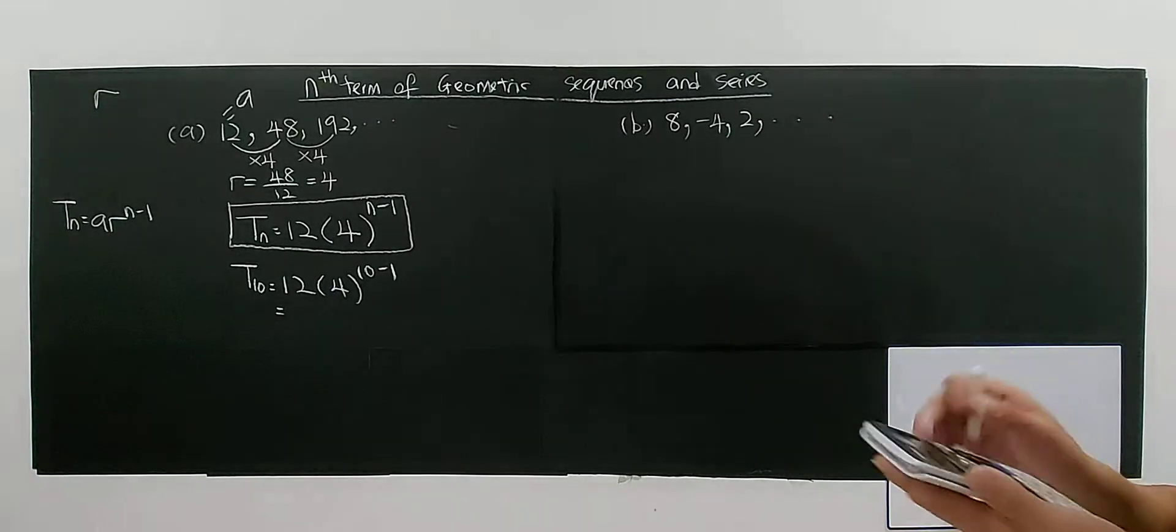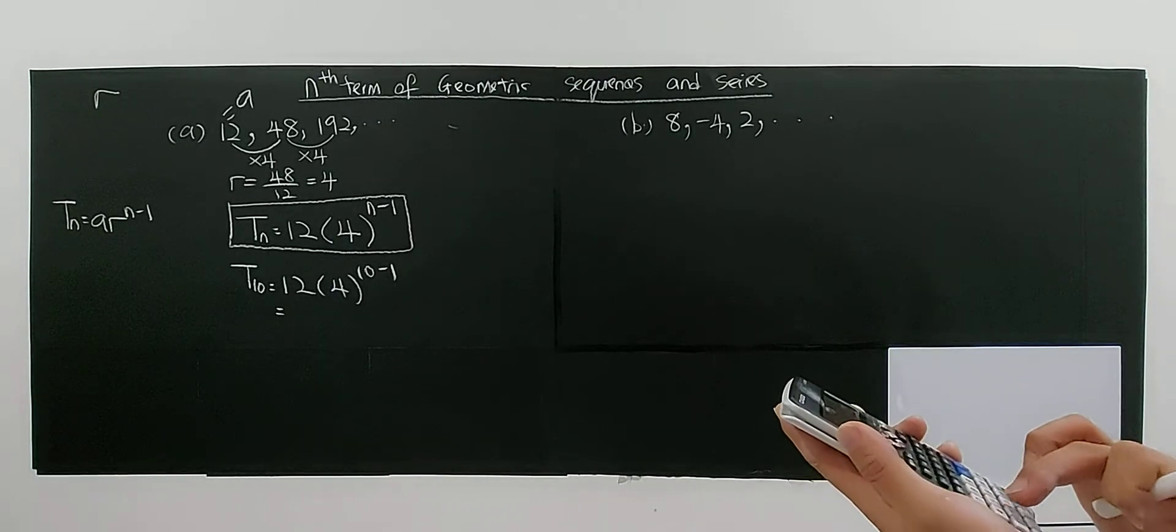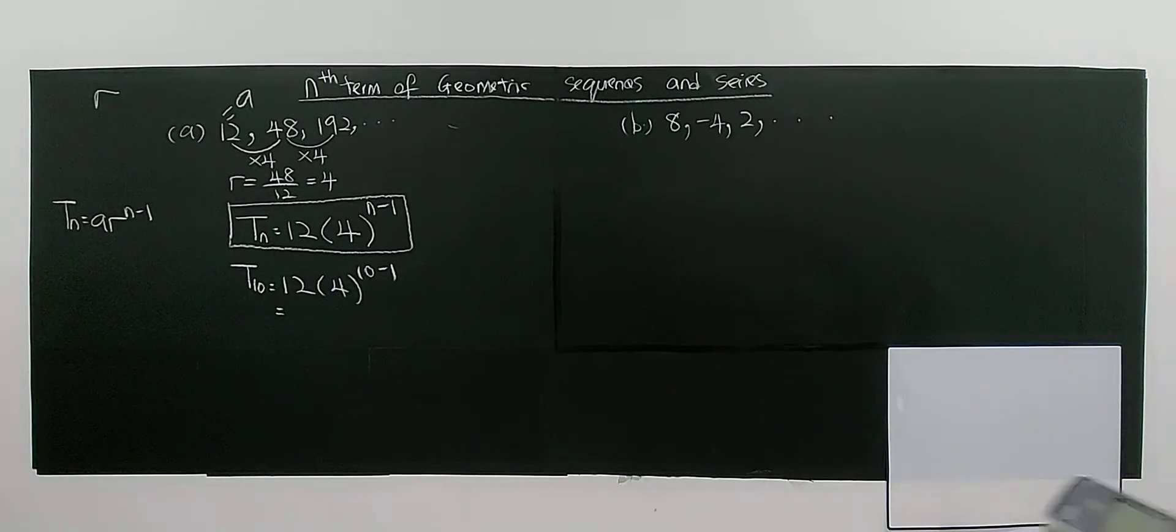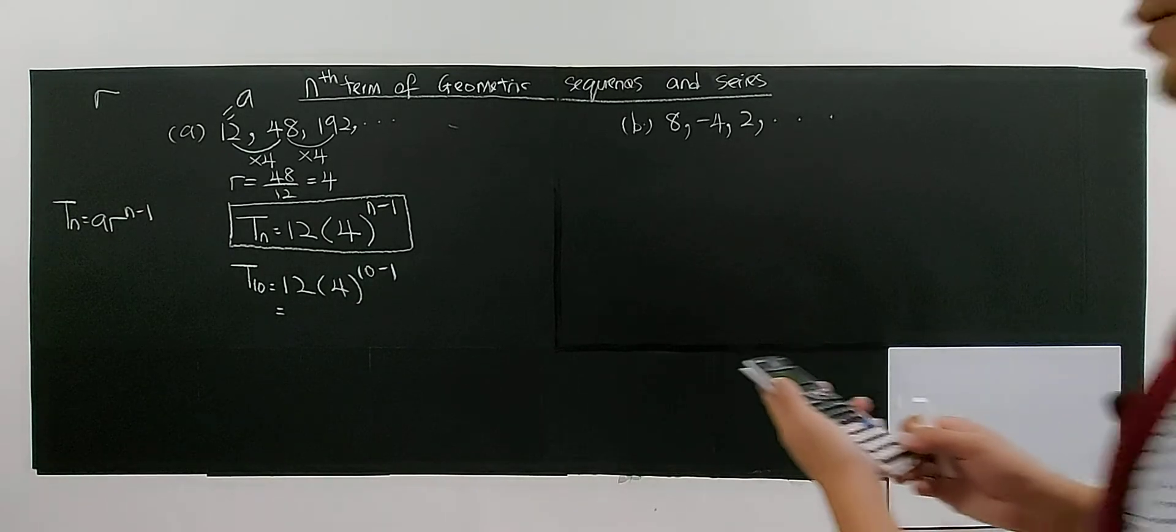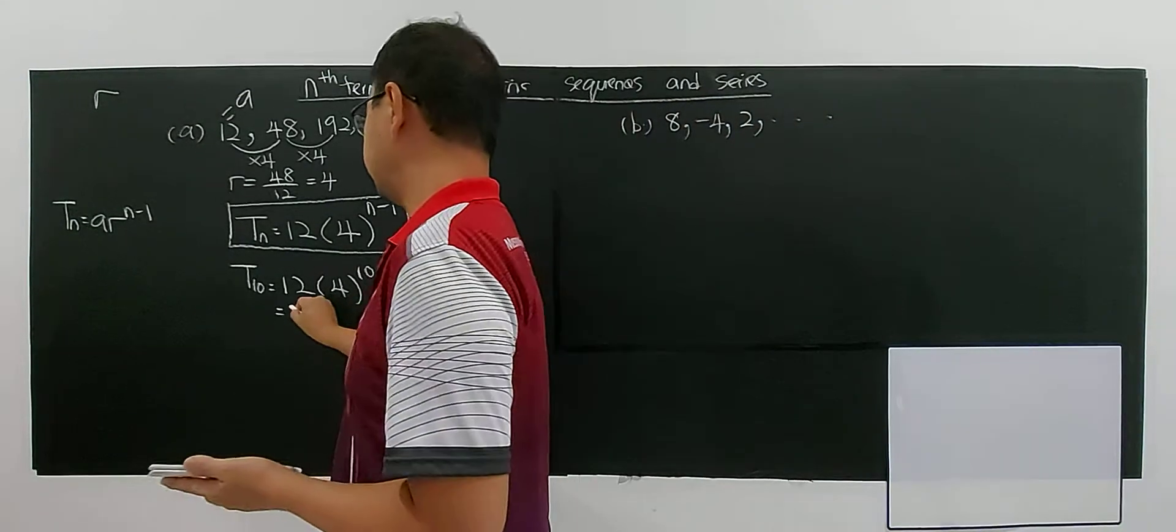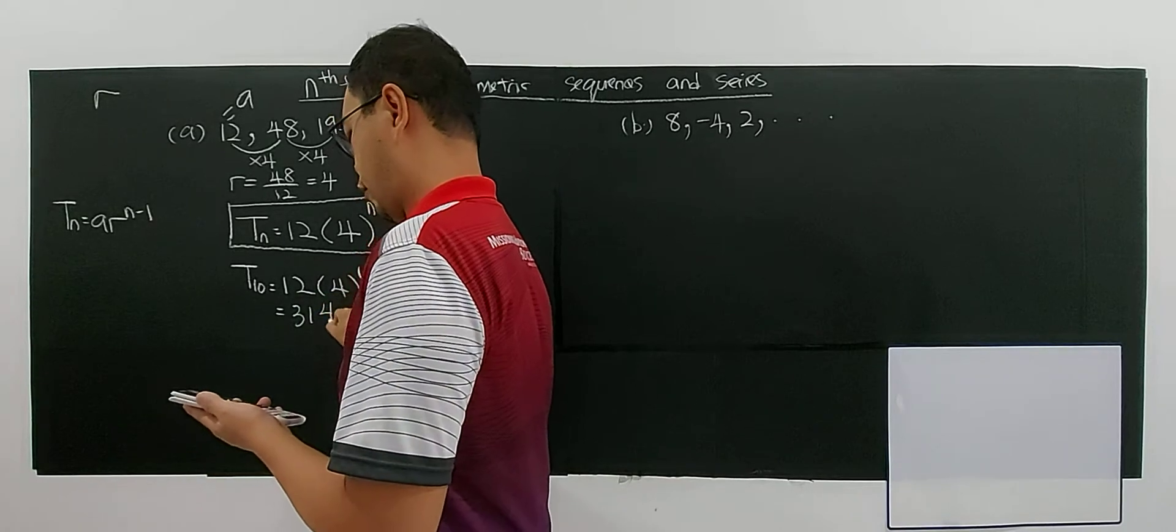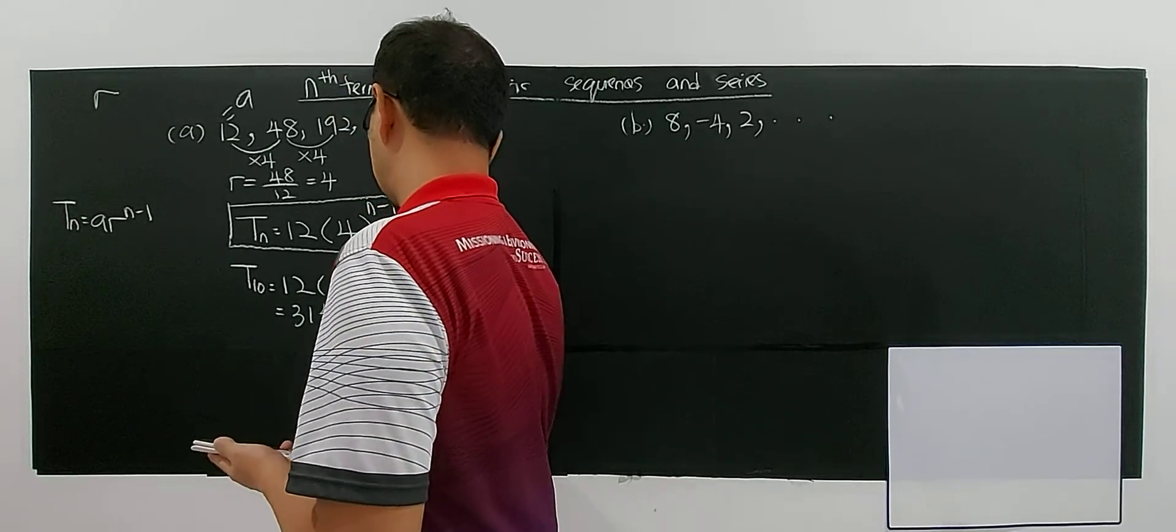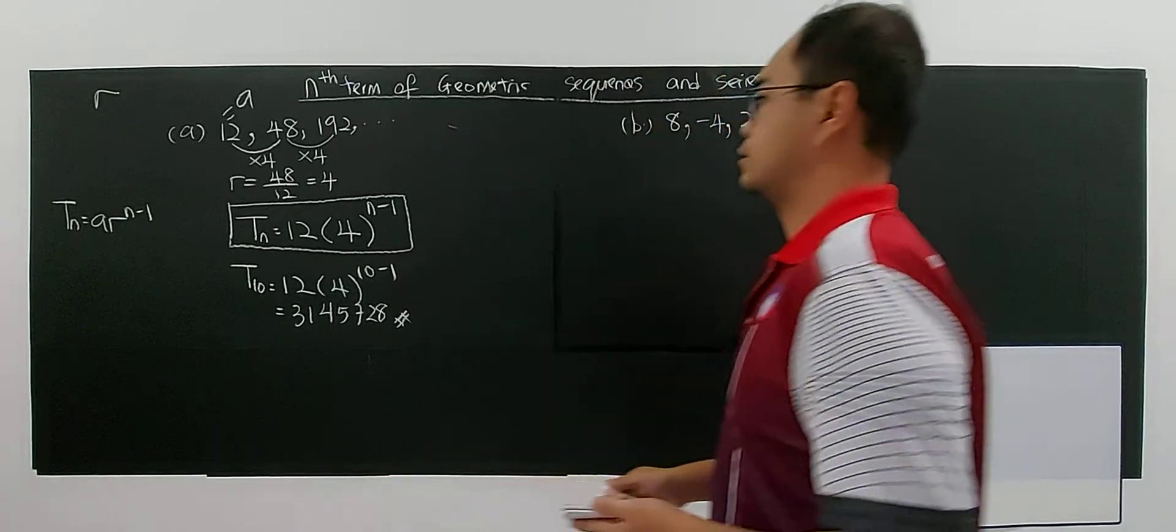So you have 12 multiplied with 4 to the power of 9. Which gives you 3,145,728. Alright, this will be your answer.